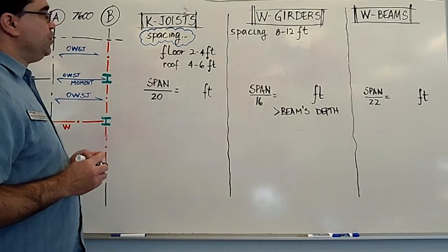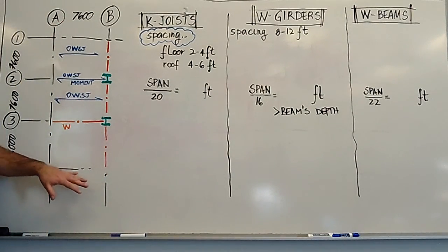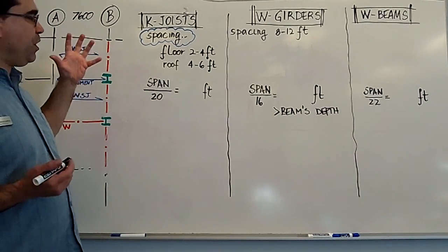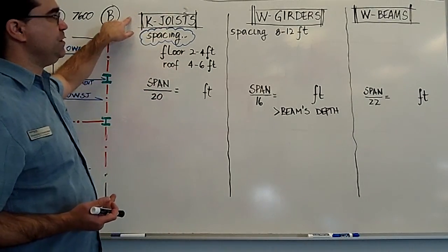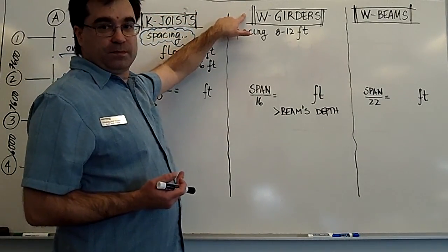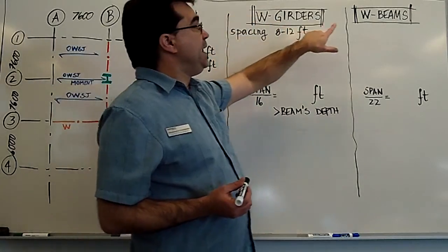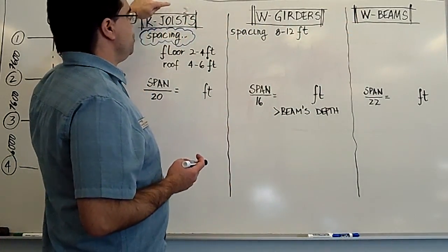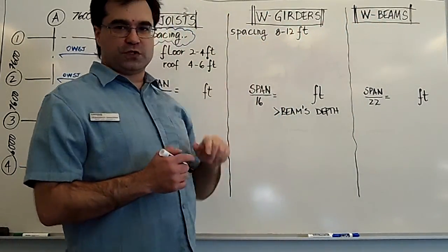Alright, so what we're going to do is we're going to try to use the same setup we have here with grid lines and distances and lengths and spans. We're going to look at coming up with the approximate depth of K-joists, girders if they're W sections and beams if they're W sections. So we'll do it in this order: joists, beams, girders.